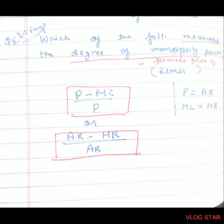Question 6. Very important question: What is the formula of degree of monopoly power? The formula is (P minus MC) upon P — that is, price minus marginal cost upon price. Price is equal to average revenue, and marginal cost is equal to marginal revenue. So it can also be written as (AR minus MR) upon AR.